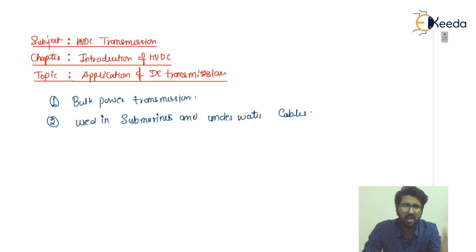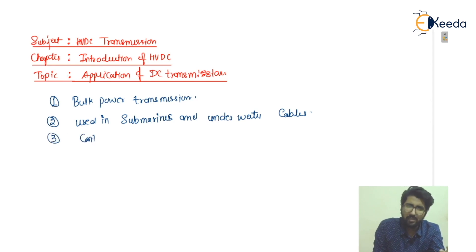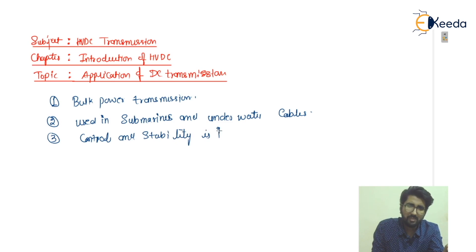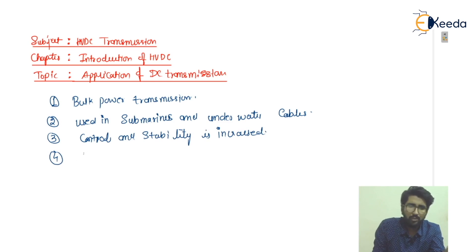DC transmission is being actually used for submarines and underwater cables — that you have to remember. The third point is that controllability and stability are also increased. The fourth is related with the asynchronous tie.